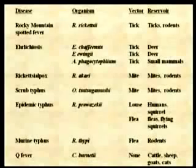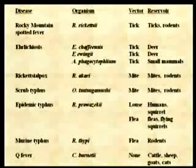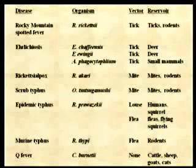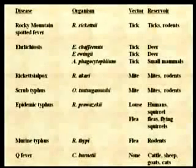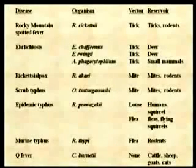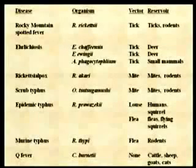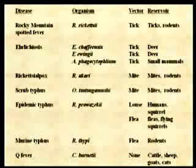Ehrlichiosis is caused by three species: Ehrlichia chaffeensis, Ehrlichia ewingii, and Anaplasma phagocytophilum. Again, all have tick vectors, and the reservoirs are small mammals or deer, differing by geographic location. Rickettsialpox is caused by Rickettsia akari; the vector is a mite and the reservoir is the mite and rodents. Scrub typhus is caused by Orientia tsutsugamushi, again with its own vectors and reservoirs.